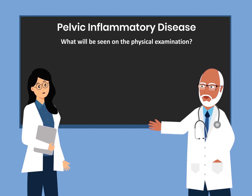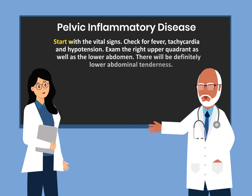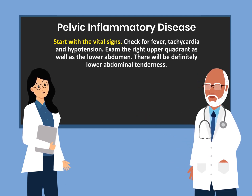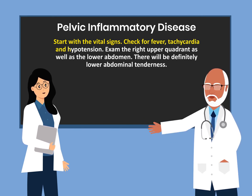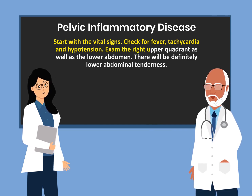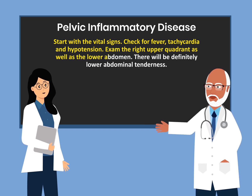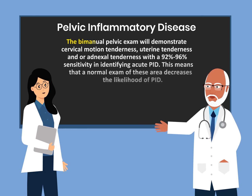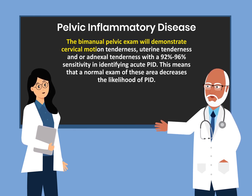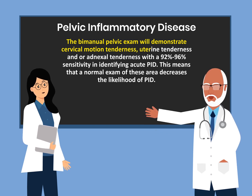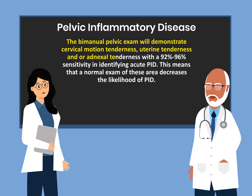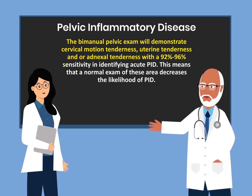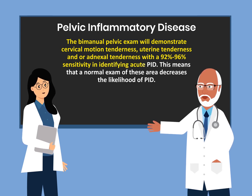What will be seen on the physical examination? Start with the vital signs. We're going to check for fever, tachycardia, and hypertension. Examine the right upper quadrant as well as the lower abdomen. There will definitely be lower abdominal tenderness. The bimanual pelvic examination will demonstrate cervical motion tenderness, uterine tenderness, and or adnexal tenderness with a 92–96% sensitivity in identifying acute PID.